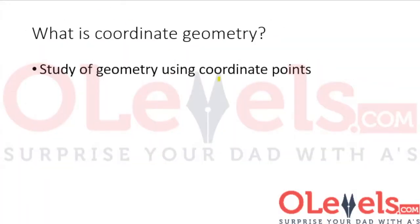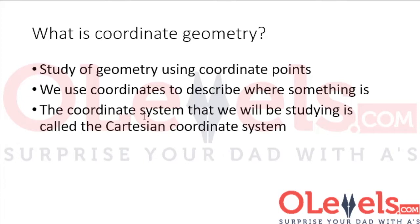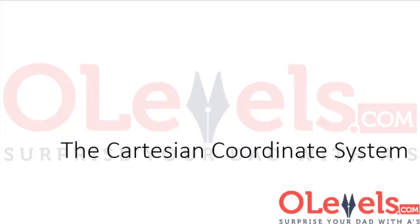Coordinate geometry is the study of geometry using coordinate points. We use coordinates to describe where something is. The coordinate system that we will be studying is called the Cartesian coordinate system. Let's learn more about the Cartesian coordinate system and what coordinates are.